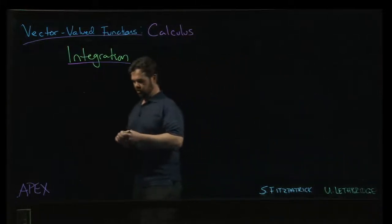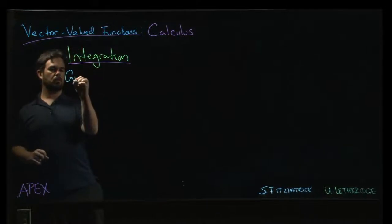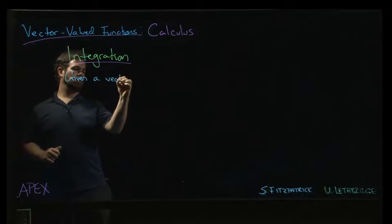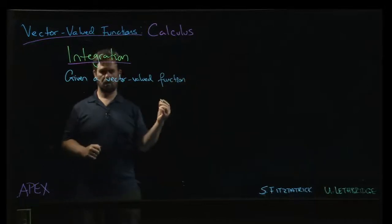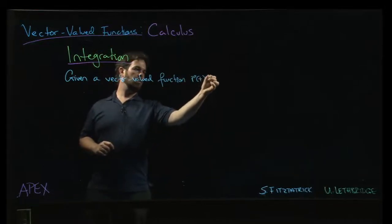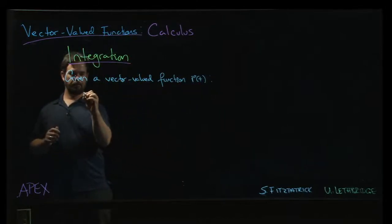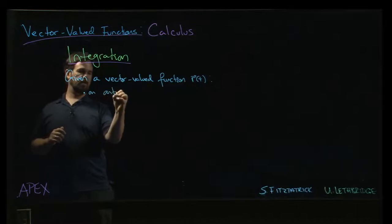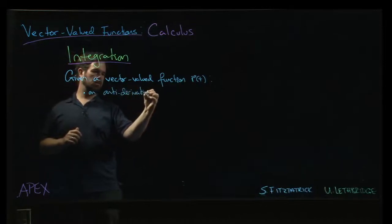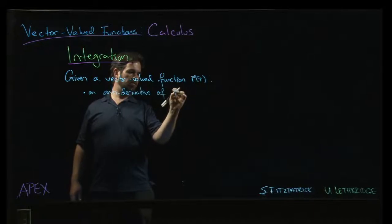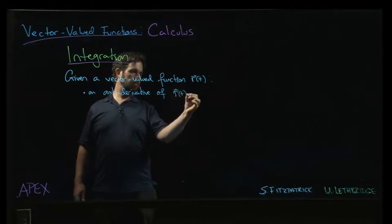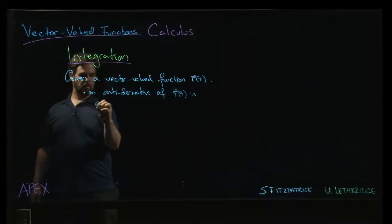Next, we're going to look at integration. So, given a vector-valued function, let's say r of t. Well, an antiderivative of r of t is... let me just write vvf for a vector-valued function.